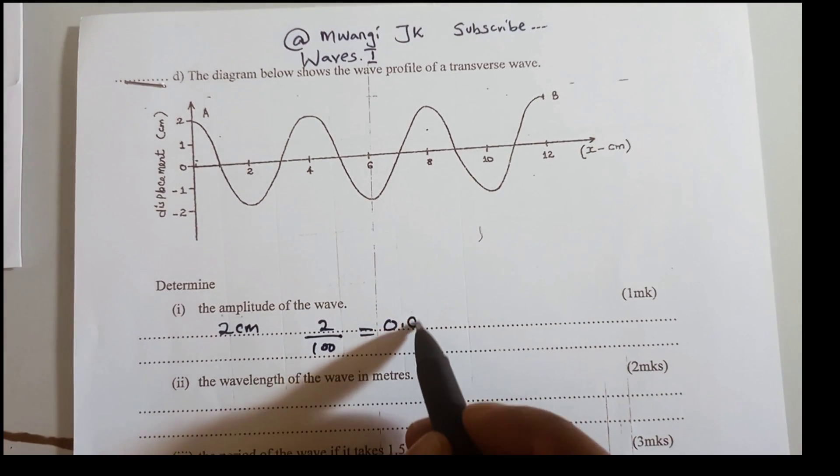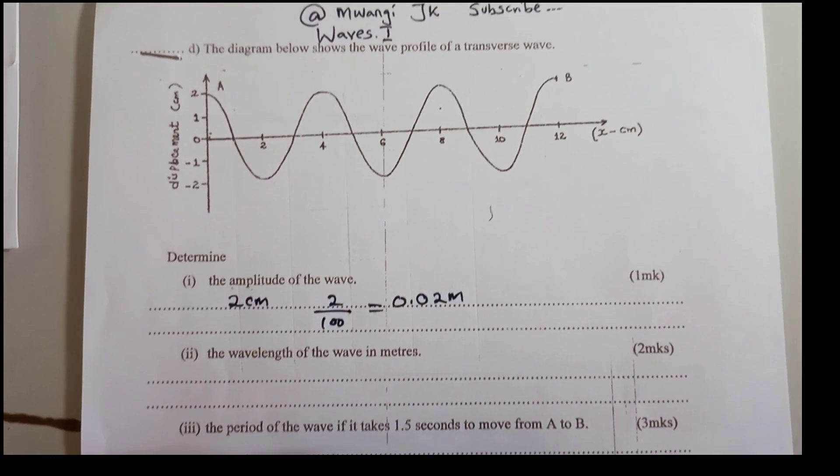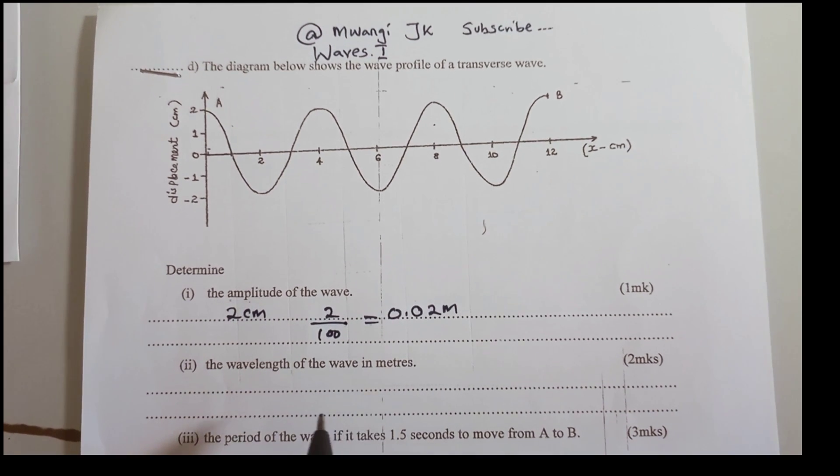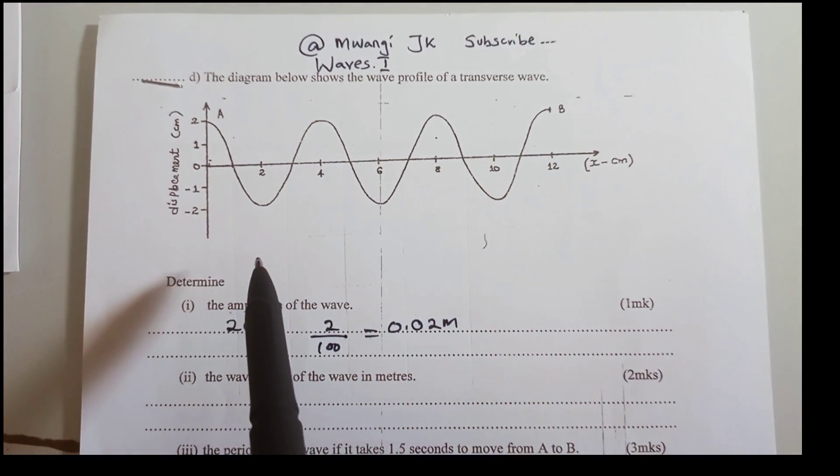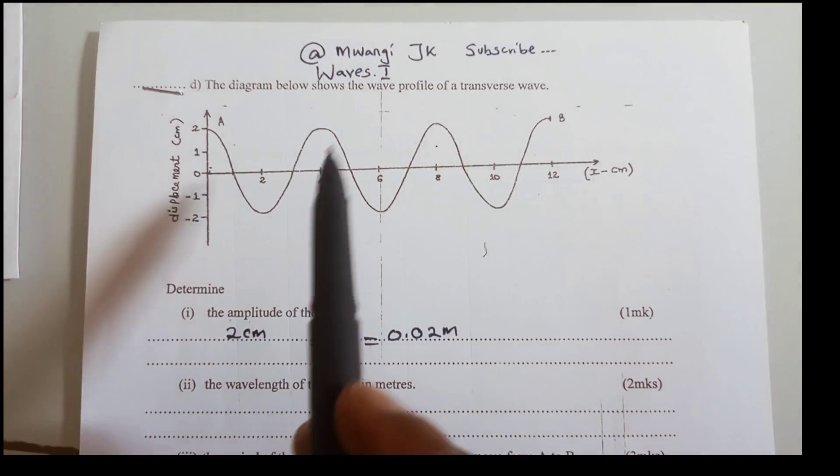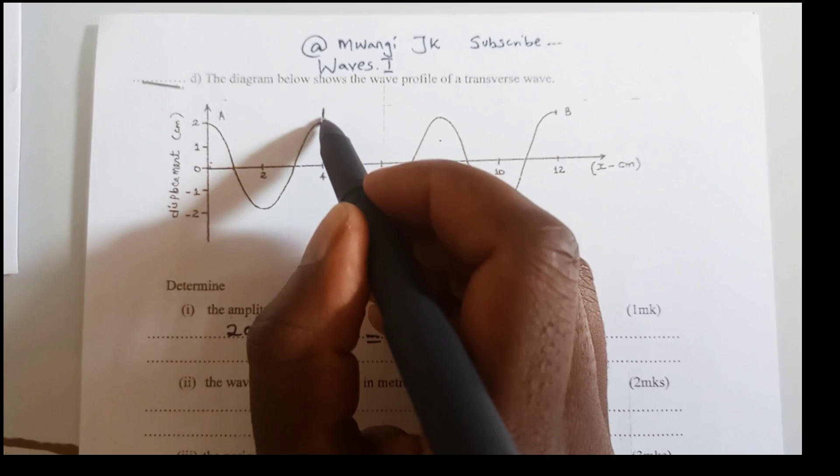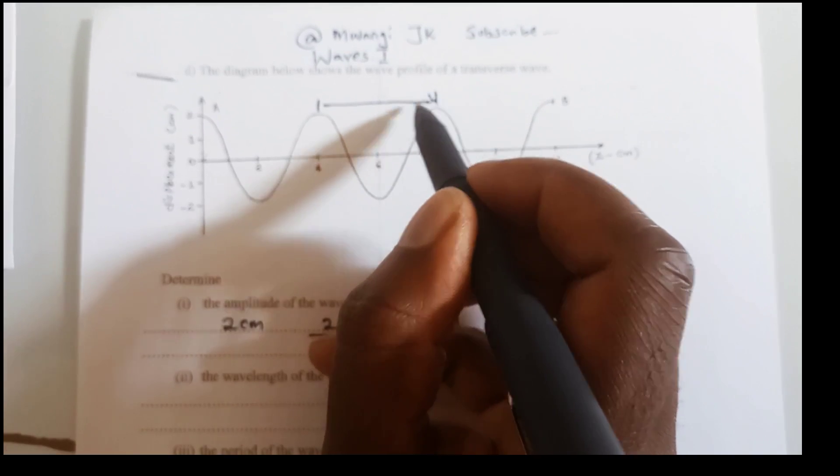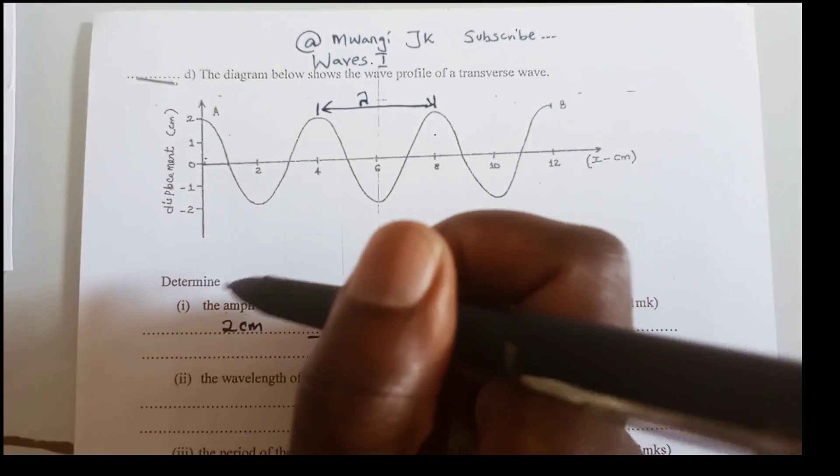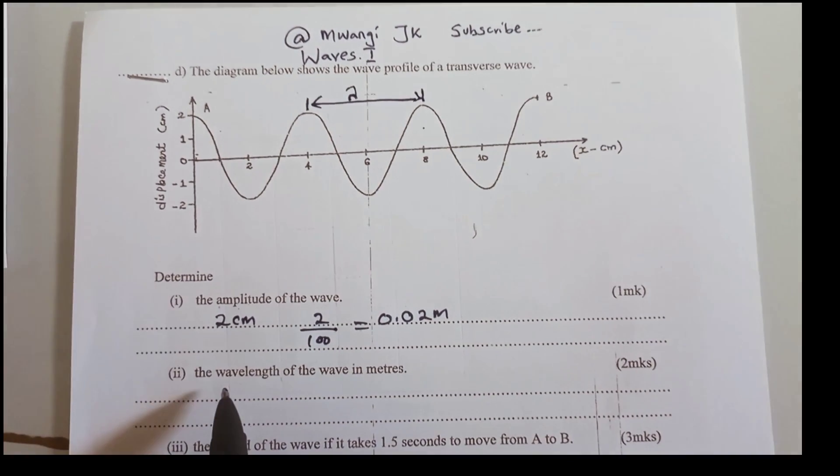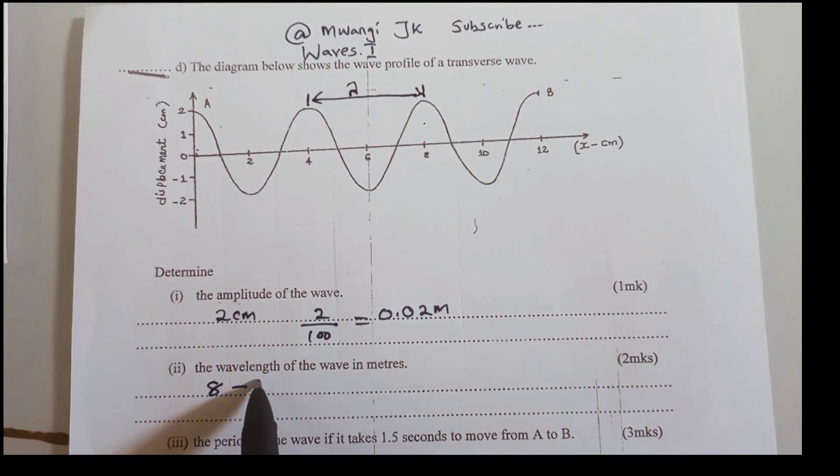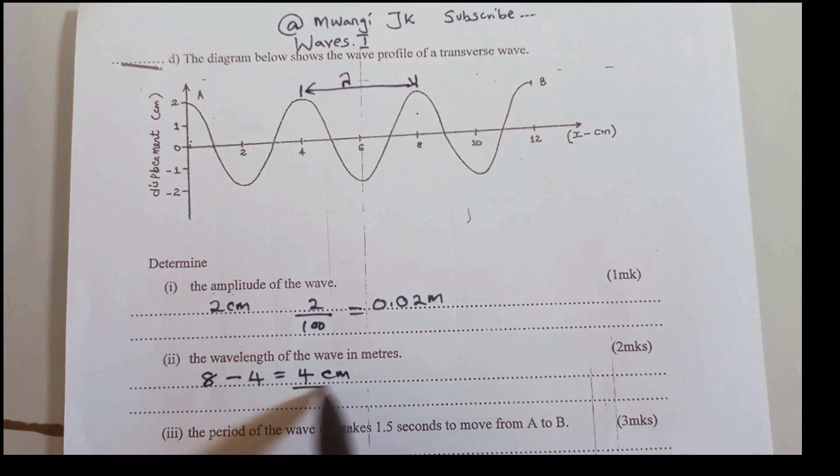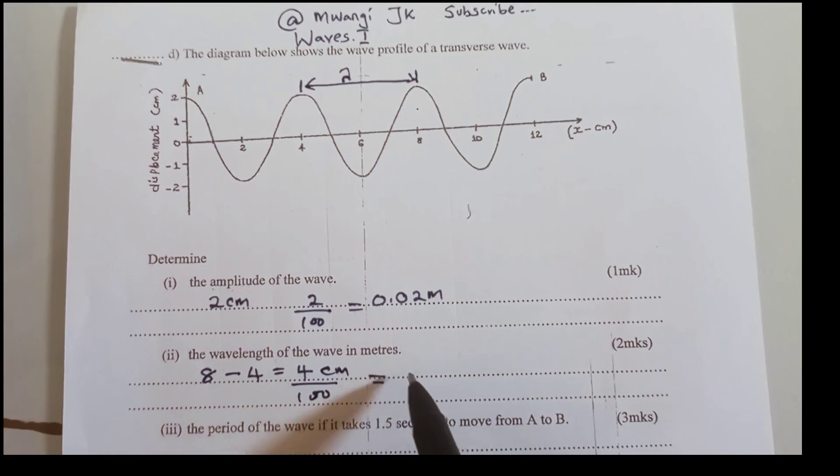The wavelength of the wave in meters. We talked about a wavelength that is the distance between two successive troughs or crests. If we consider the crest, we have at 4, and at 8 there. That is our wavelength. We'll say 8 minus 4, we get 4. And if you do it using the trough, we can talk of 6 minus 2, we'll still get 4. 4 divided by 100, we get 0.04 meters. That is the wavelength of this wave.